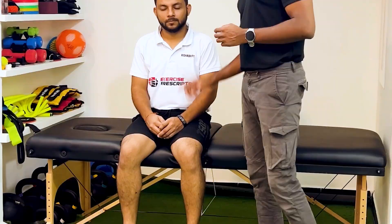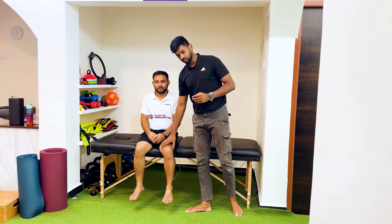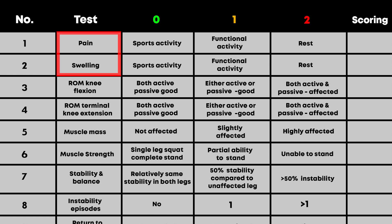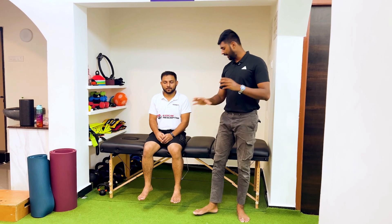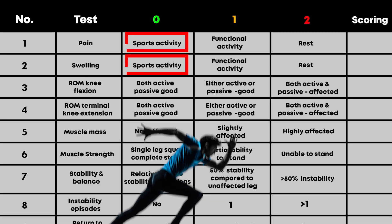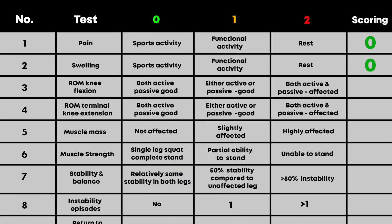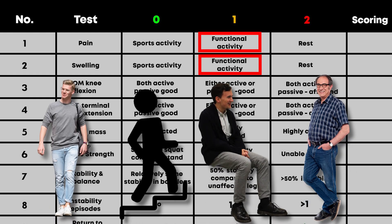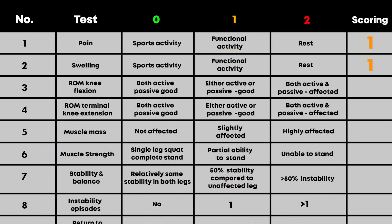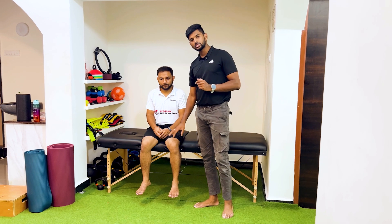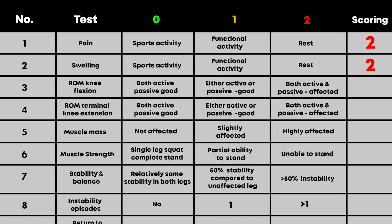Consider our model: the left leg is affected, the right leg is not affected. We are going to apply this 12-point scale on him. The first and second points of the scale are pain and swelling. If the person has pain and swelling only during sports-related loading activity, score zero. If pain occurs during functional activities like walking or stair climbing, score one. If pain and swelling are present at rest, score two.